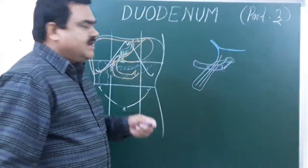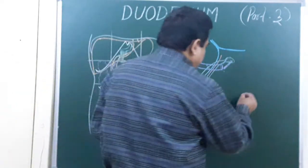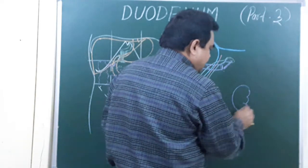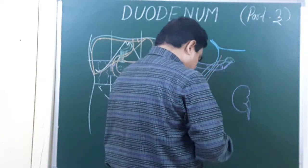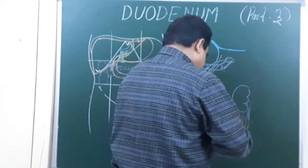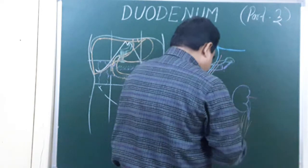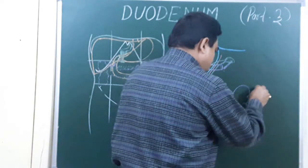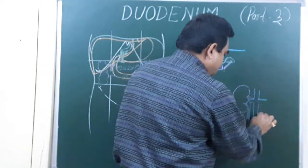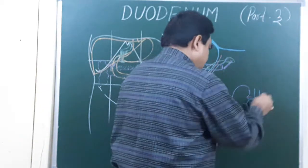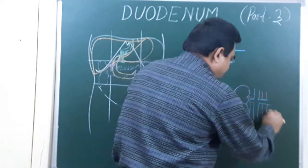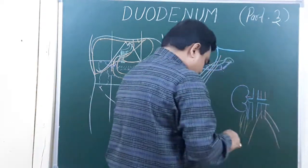Now the posterior relations of the third part — here you can see the right kidney. There is also the renal artery, renal vein, and abdominal ureter.